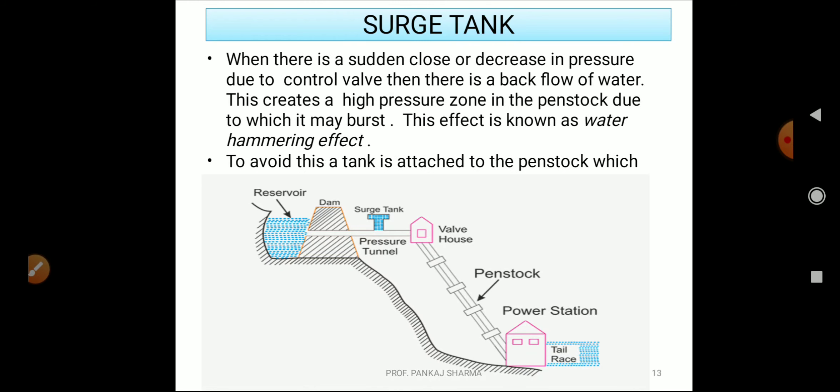See this surge tank. When there is sudden close or decrease in pressure due to control valve, then there is a back flow of water. This is called hammering of water. This creates a high pressure zone in penstock due to which it may burst. This effect is known as water hammering effect. To avoid this, we actually make use of surge tank before the path of your penstock. A tank is attached to the penstock which actually safeguards the system. This is your surge tank.